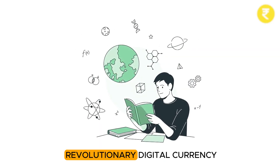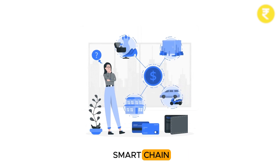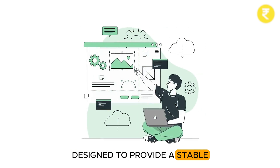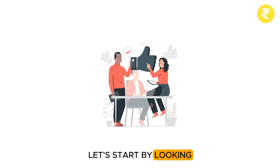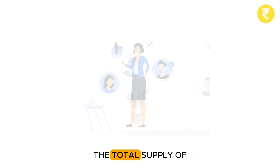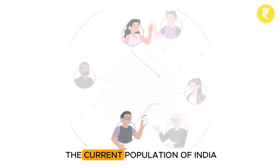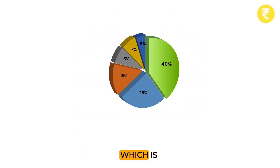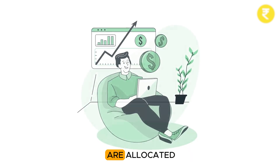Digital Rupee is a revolutionary digital currency built on the Binance Smart Chain, designed to provide a stable, secure, and accessible medium of exchange. Let's start by looking at the token allocation. The total supply of Digital Rupee tokens is dynamically tied to the current population of India, which is 1,441,719,152 tokens. Here's how these tokens are allocated.